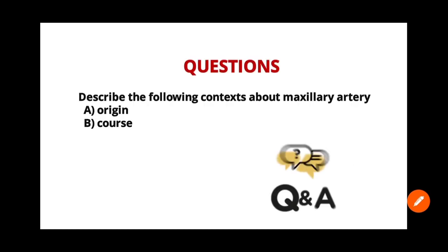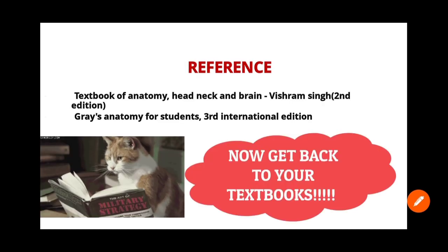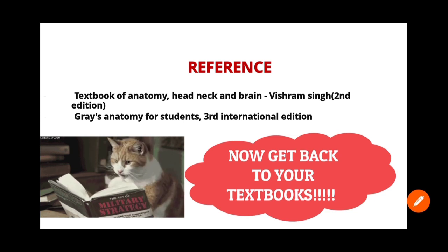Exam questions from this topic ask you to describe the origin and course of the maxillary artery. For origin, start from the common carotid artery or from where the external carotid artery arises. For the course, divide it into three parts and discuss each. Try to draw the figures yourself. References used are: Textbook of Anatomy Head, Neck and Brain by Vishram Singh, second edition, and Gray's Anatomy for Students, third international edition.